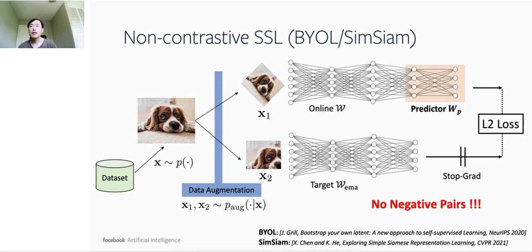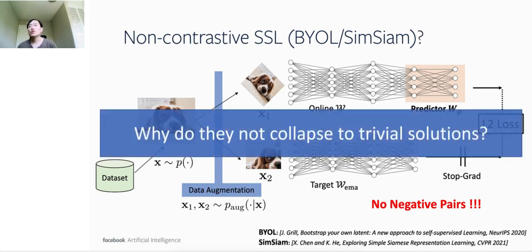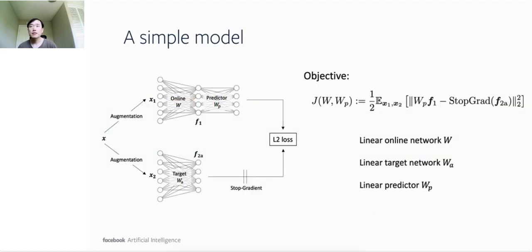While it is empirically successful, many important questions remain open. As one example, non-contrastive self-supervised learning like BYOL and SimSiam does not require any negative pairs to learn a good representation. An obvious question follows: Why do they not collapse to trivial solutions, in which the network just converges to constant representation and loss function achieves global minima?